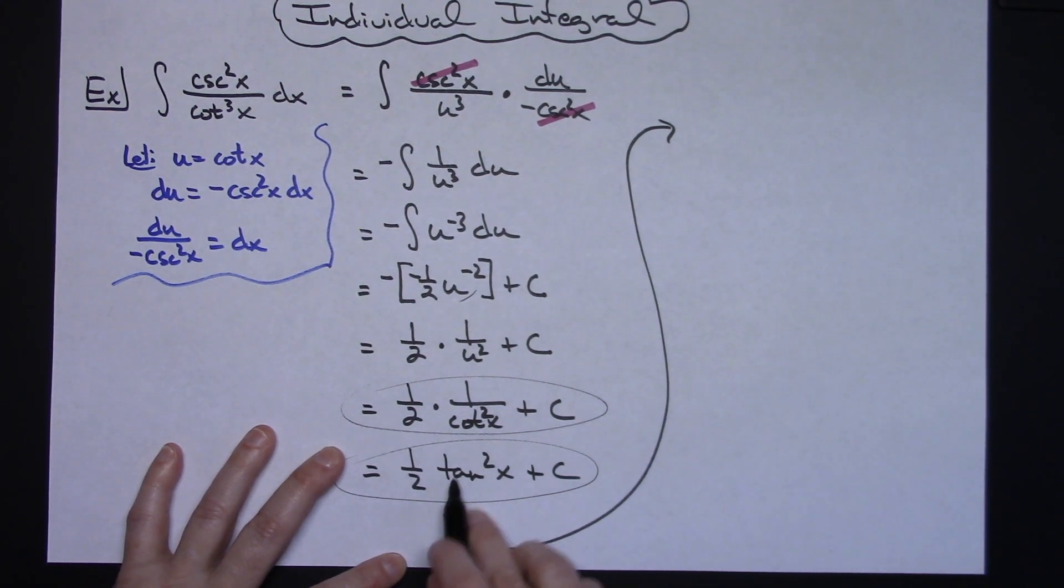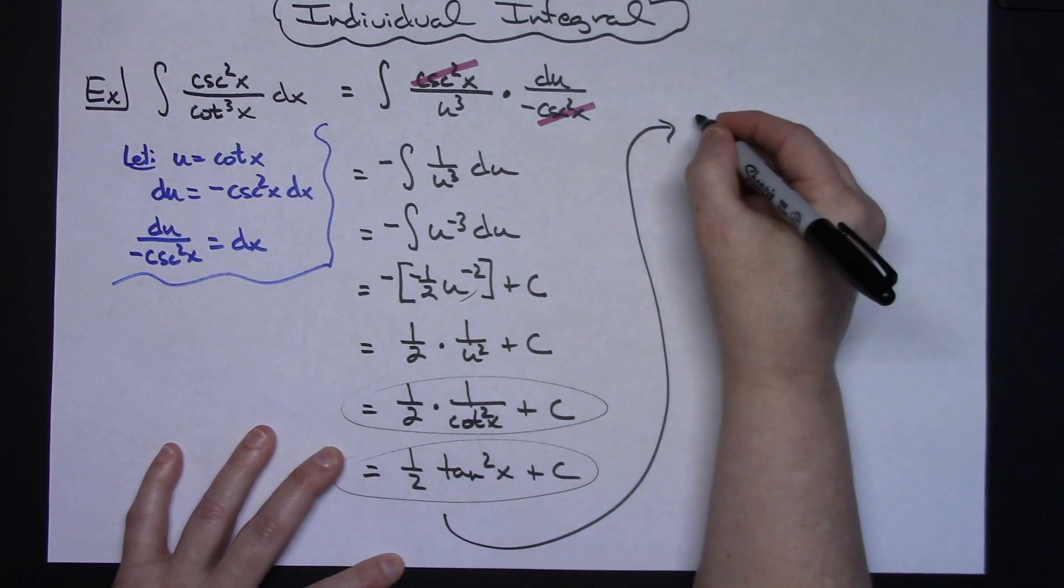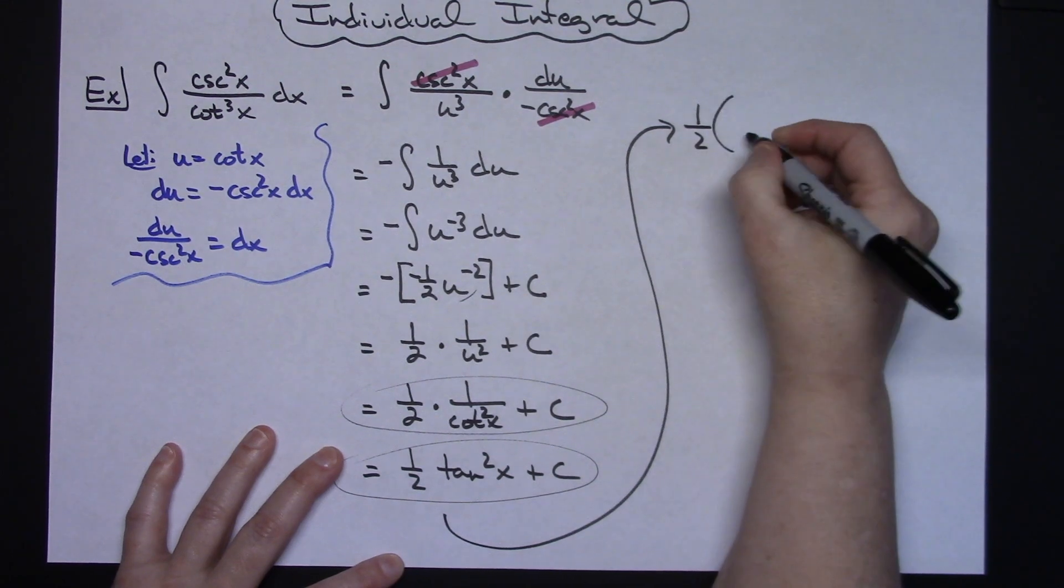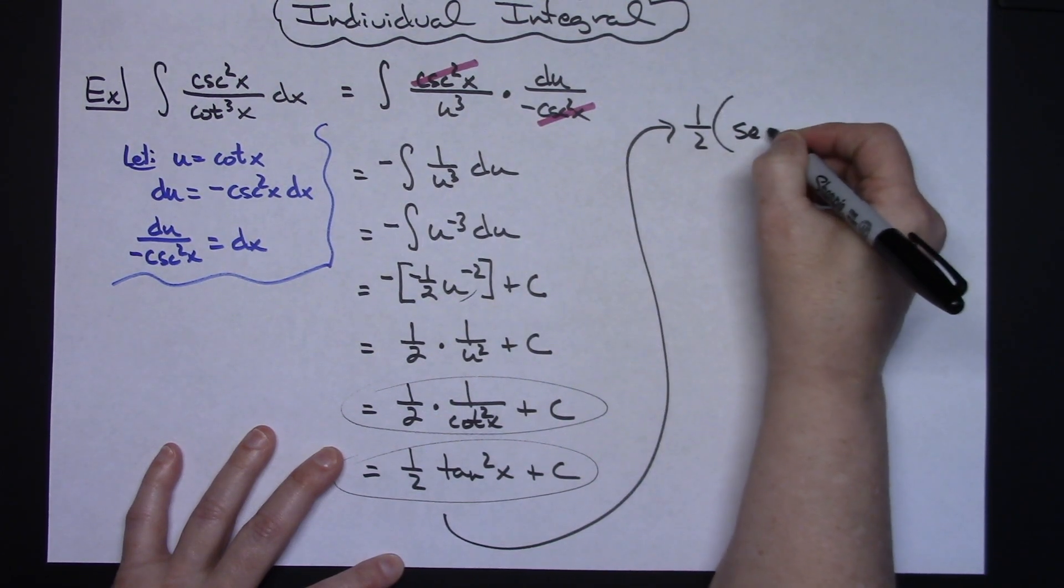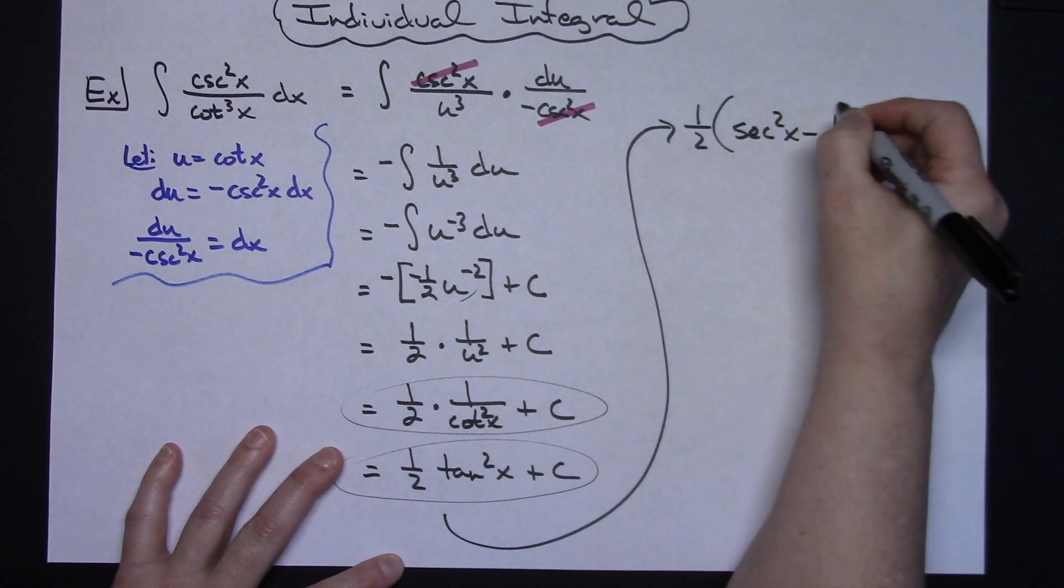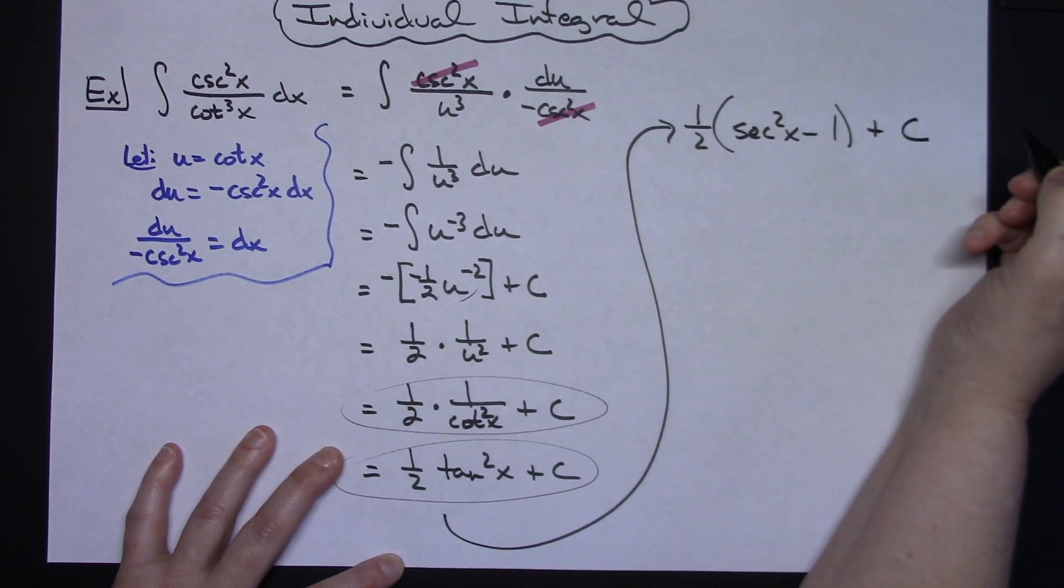This tangent squared x, you know that's a pretty popular Pythagorean identity. Secant squared x minus 1. So I could make that substitution. So if I did a 1 half and then I did a secant squared x minus 1 and then I still have that plus c constant out there.